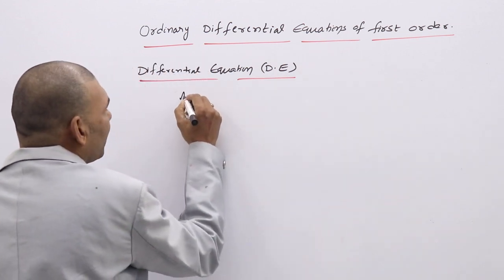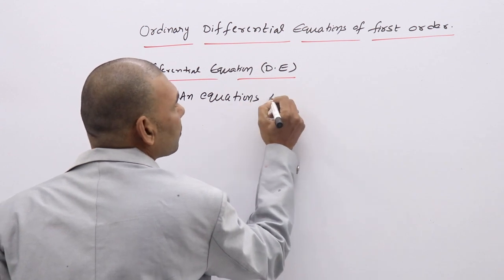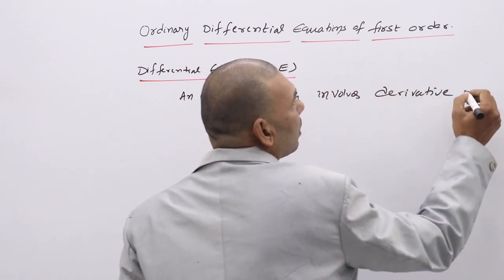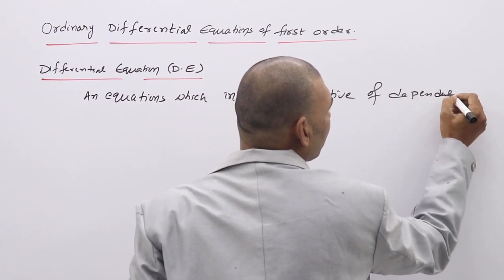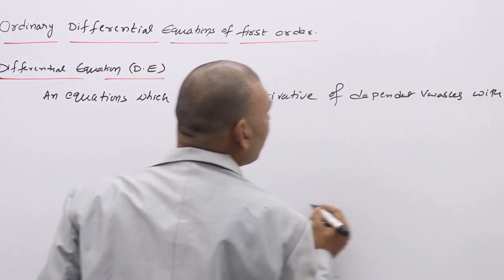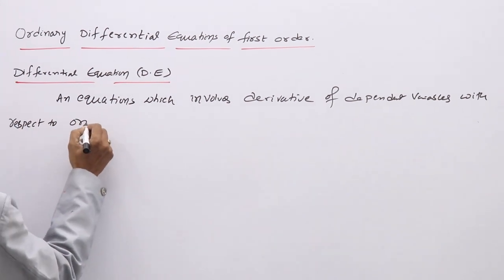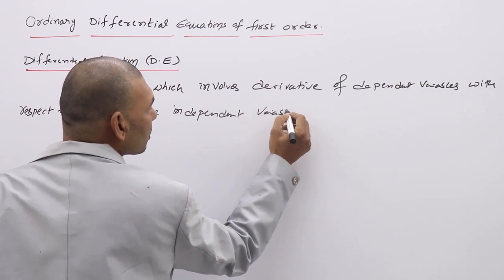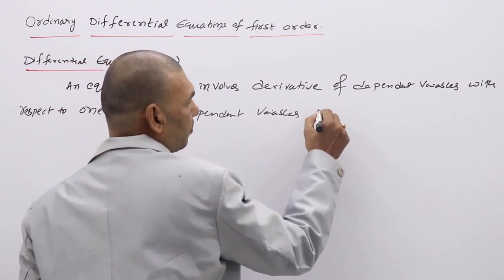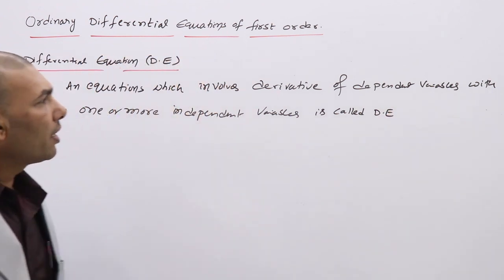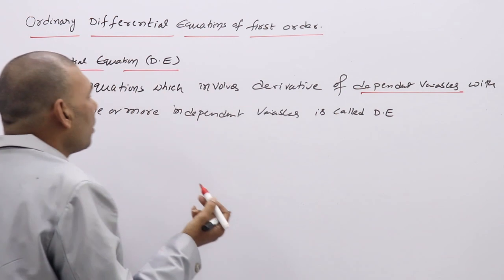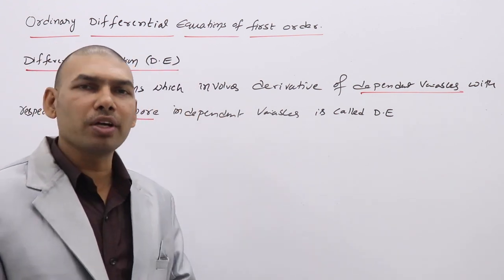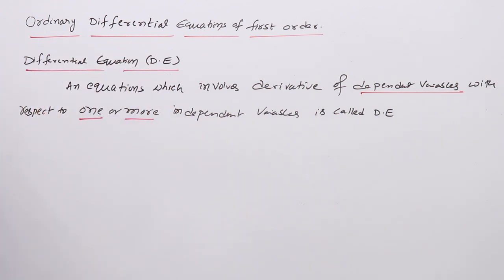An equation which contains or involves derivatives of a dependent variable with respect to one or more independent variables. Based on whether derivatives involve one independent variable or more than one independent variable, the differential equation is classified into two types.